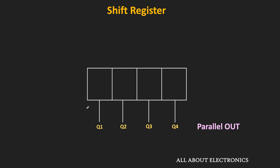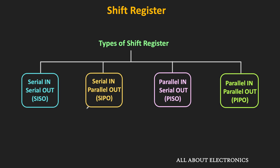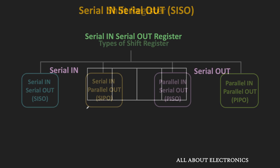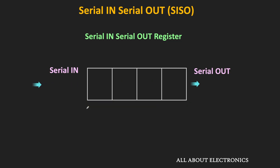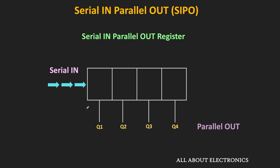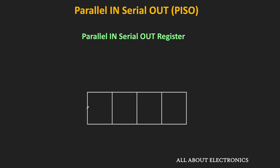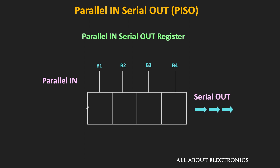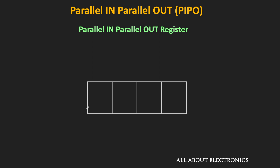So depending on how the data is loaded into the shift register and how the data is retrieved, we have a total of 4 types of shift registers. That is Serial in Serial out, Serial in Parallel out, Parallel in Serial out, and Parallel in Parallel out. In the first type, the data is serially loaded into the register and also taken out serially. In Serial in Parallel out, the data is loaded serially but can be accessed in parallel. In Parallel in Serial out, the data is loaded in parallel but taken out serially. And in Parallel in Parallel out, the data is loaded in parallel and also taken out in parallel.